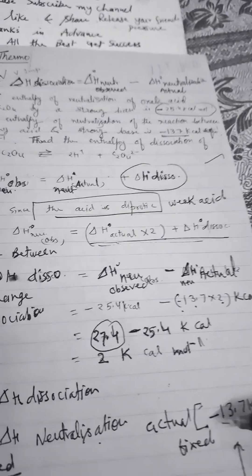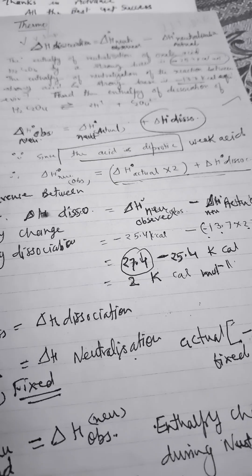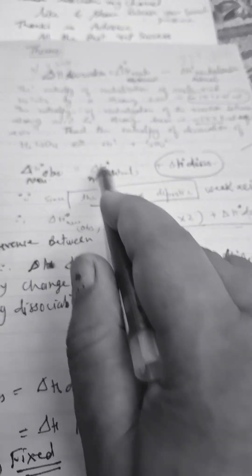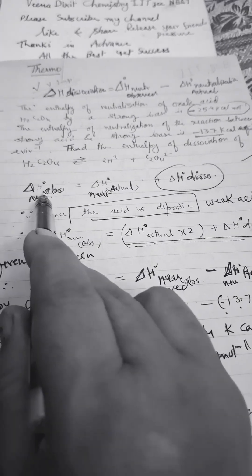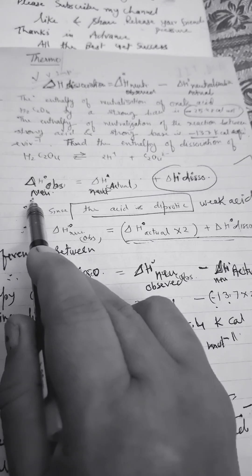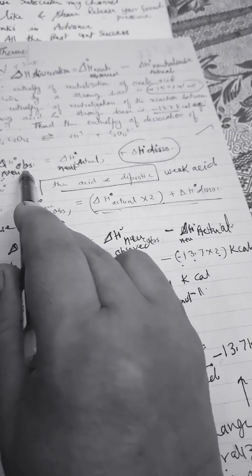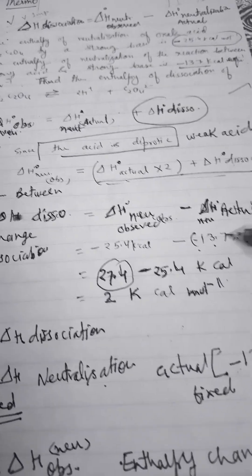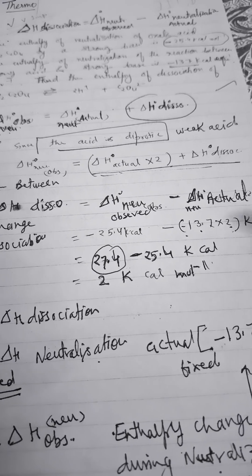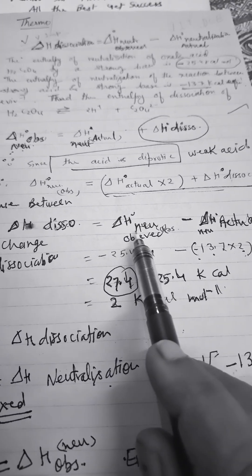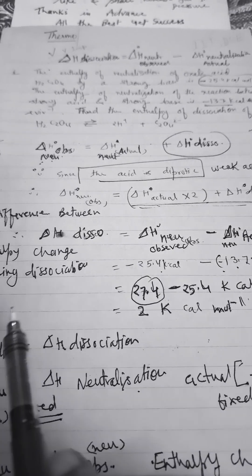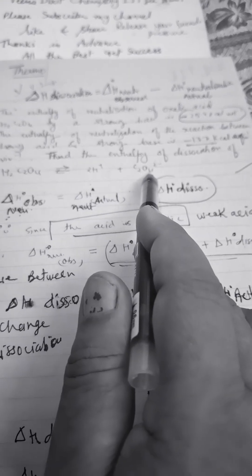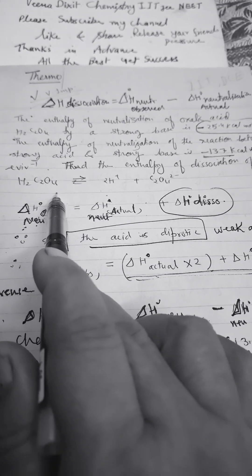The actual and observed values are different. Delta H observed equals delta H actual plus delta H dissociation. Since neutralization is exothermic and dissociation is endothermic, the observed enthalpy of neutralization will be lower than the actual value. For oxalic acid, the actual value would be 13.7 multiplied by 2 giving 27.4, but the observed is 25.4 — some energy is used to dissociate oxalic acid into 2H⁺ and C₂O₄²⁻.